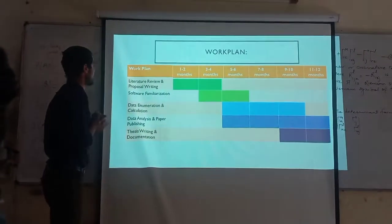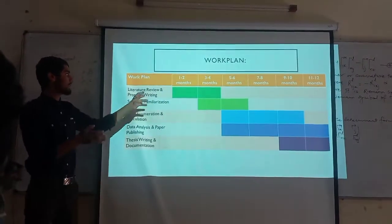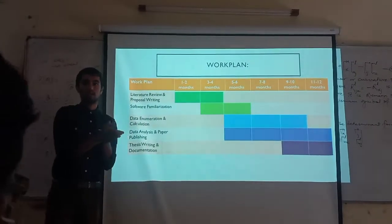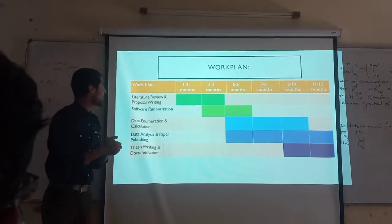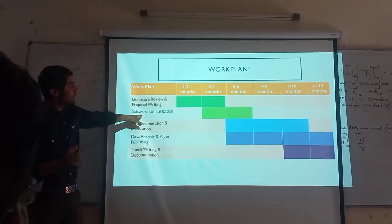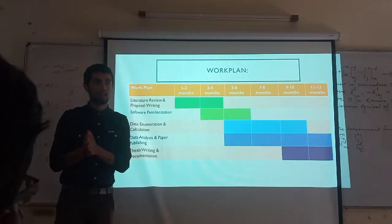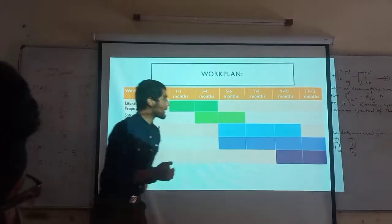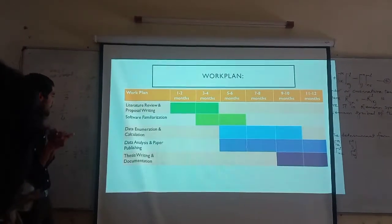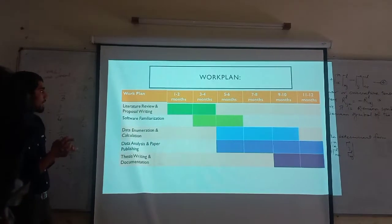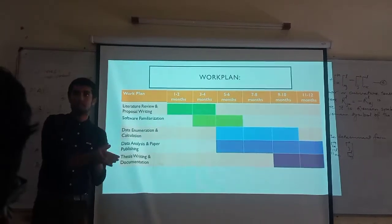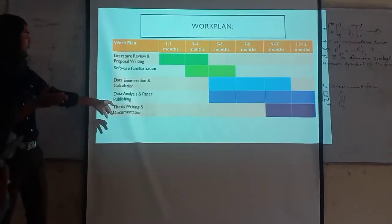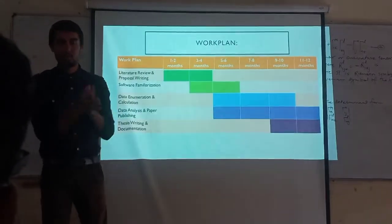I have mentioned my work plan here. It will take almost three to four months for literature review, which I have already started, along with proposal writing — which is nearly finished and only needs approval from the respected teachers. I will then spend three to four months on software familiarization, followed by five to six months collecting and calculating data. Paper publishing is estimated to take up to twelve months, and I will simultaneously be writing the thesis and documentation for my final defense.